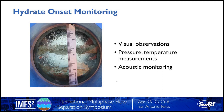Detecting the onset of hydrate formation can be done three ways: visual observations through a site window where hydrates start forming; pressure and temperature measurements—I'll show data on that; and acoustic monitoring with a sand monitor, since forming solid particulates changes the acoustic noise level in your system.